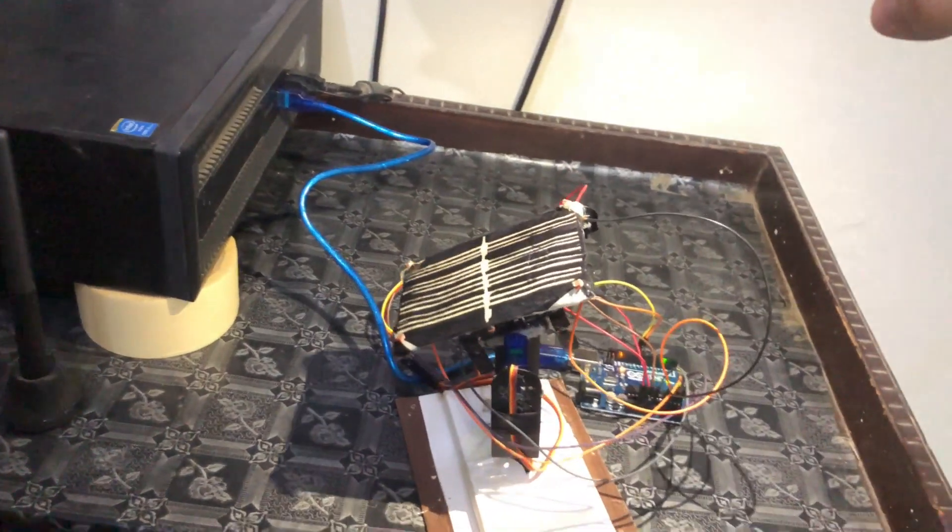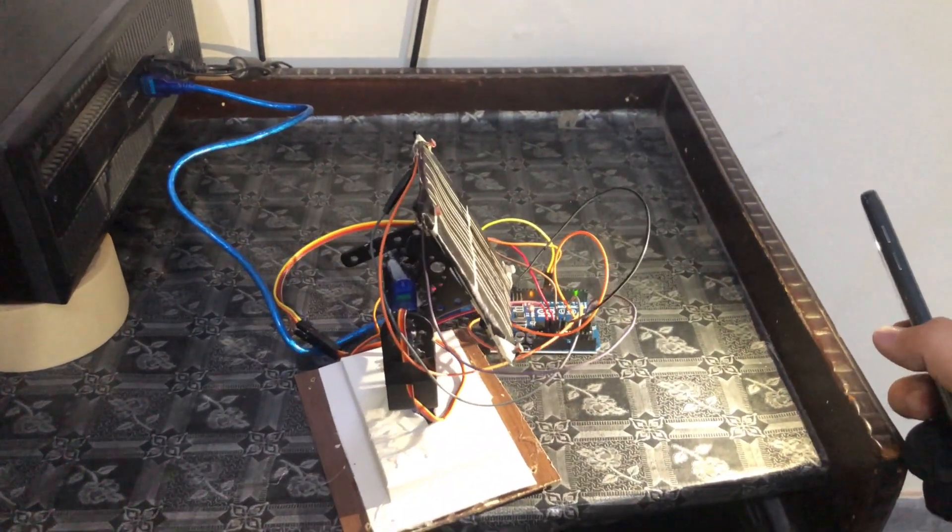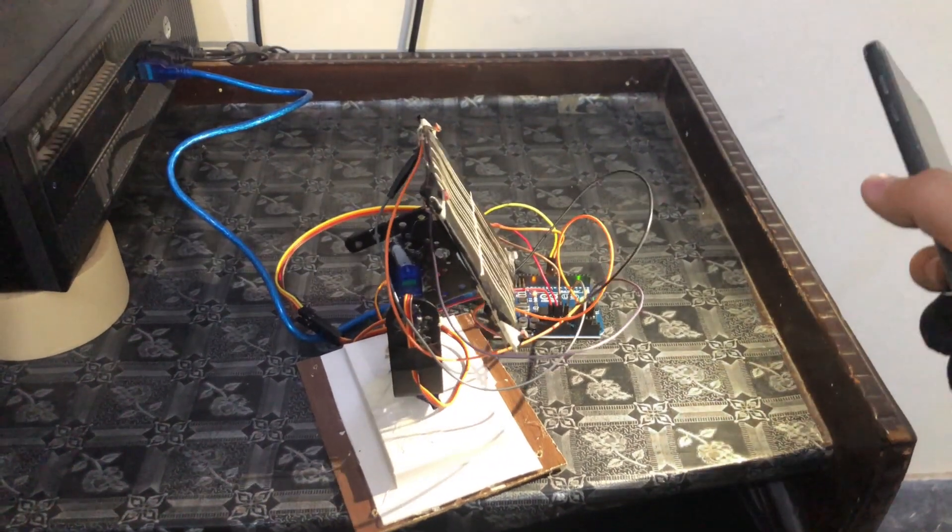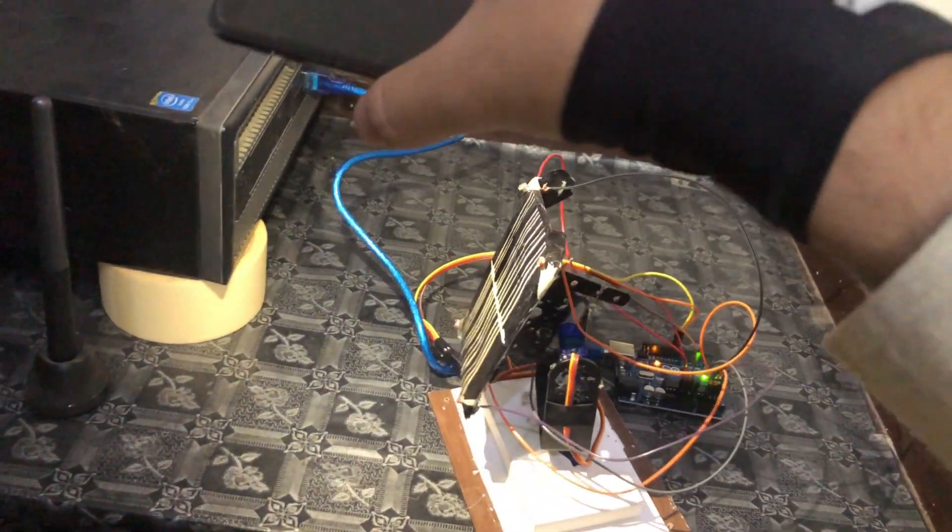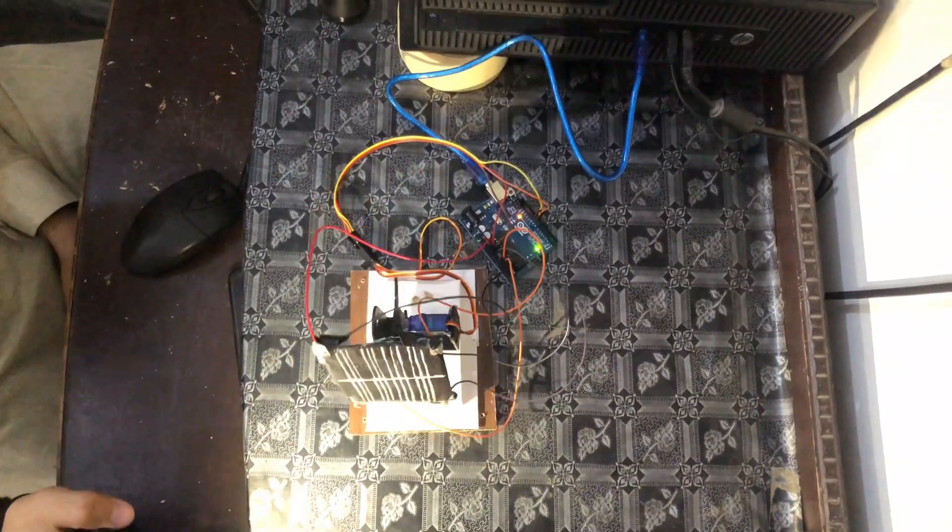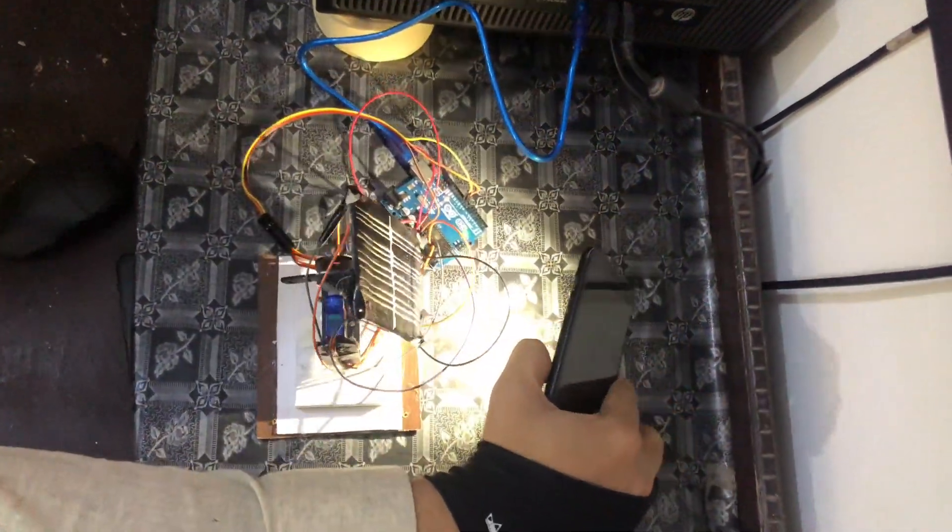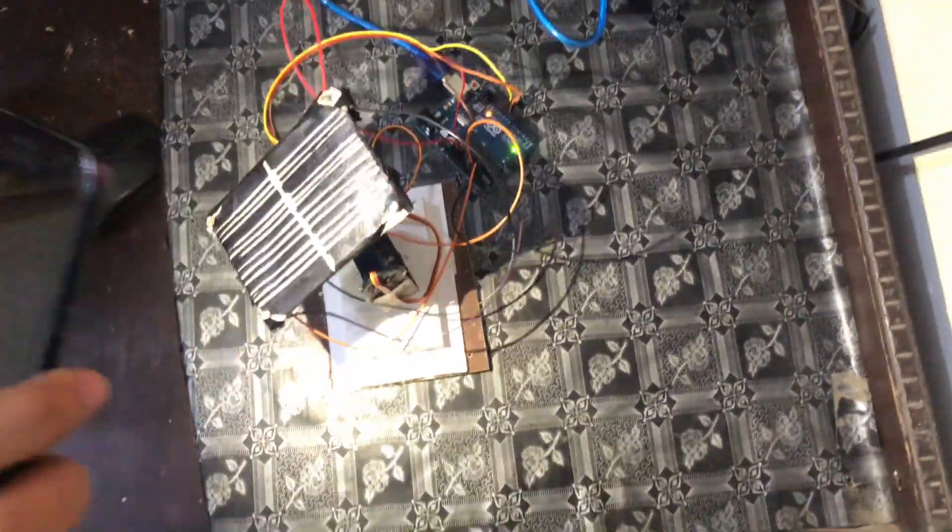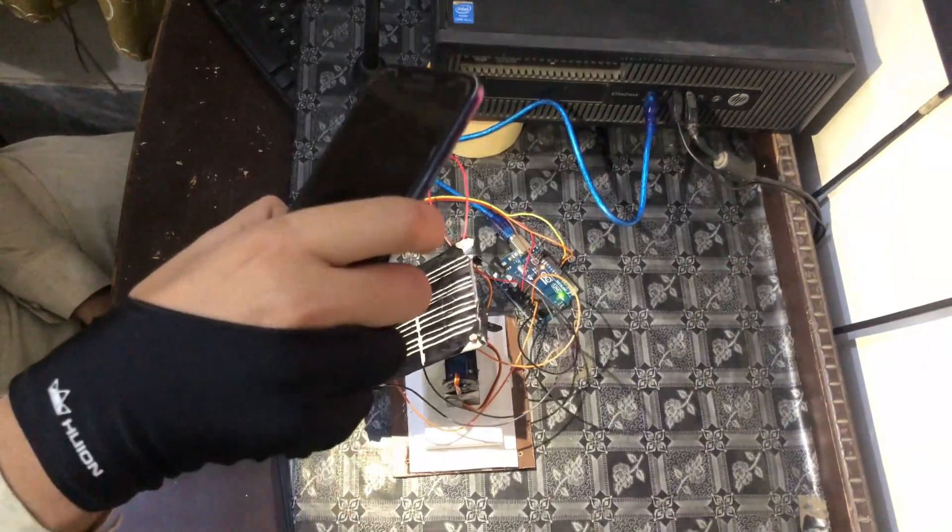This is the working of our solar tracking project. The plate of the solar panel moves with the light source and you can see the vertical motion of the plate using LDRs. We are using four LDRs. Two diagonal LDRs control the vertical motion and the other diagonal LDRs control the horizontal motion.